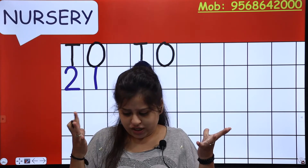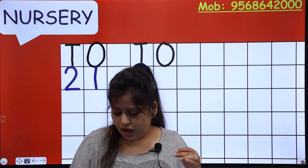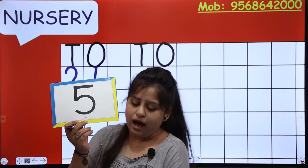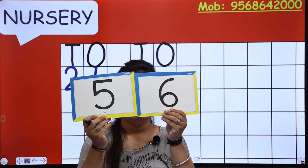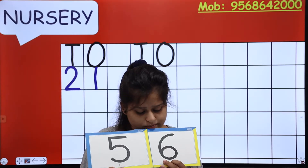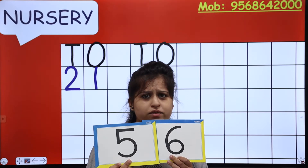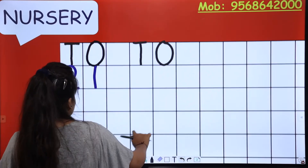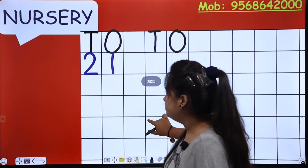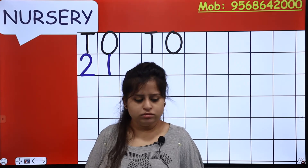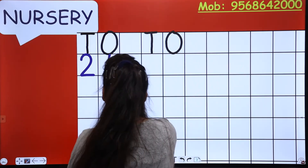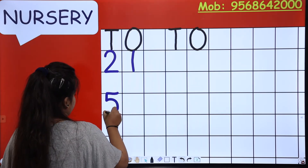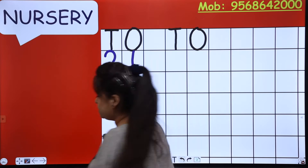Let's do magic. Tell me: if I am having number 5 in this hand and number 6 in this hand, which number is this? Five, six — fifty-six. Yes. So write down fifty-six.